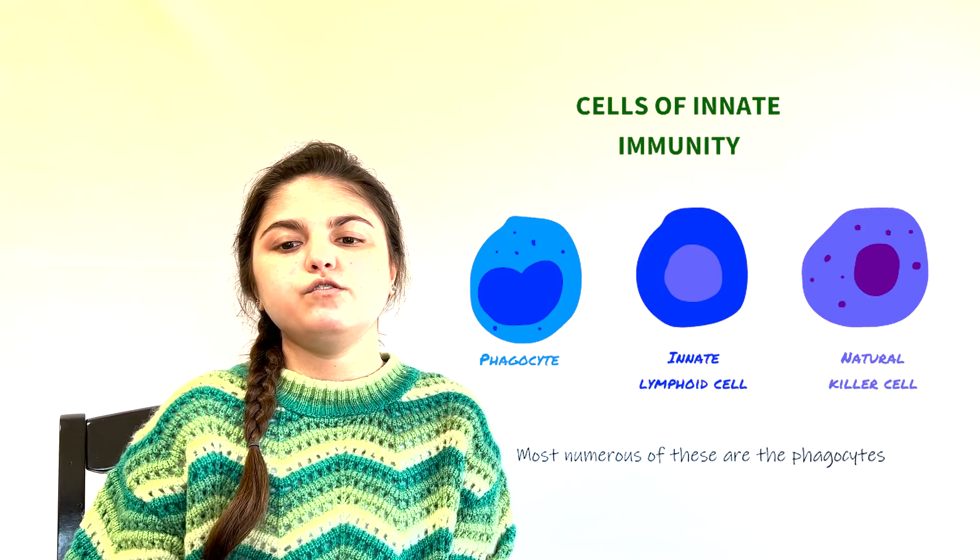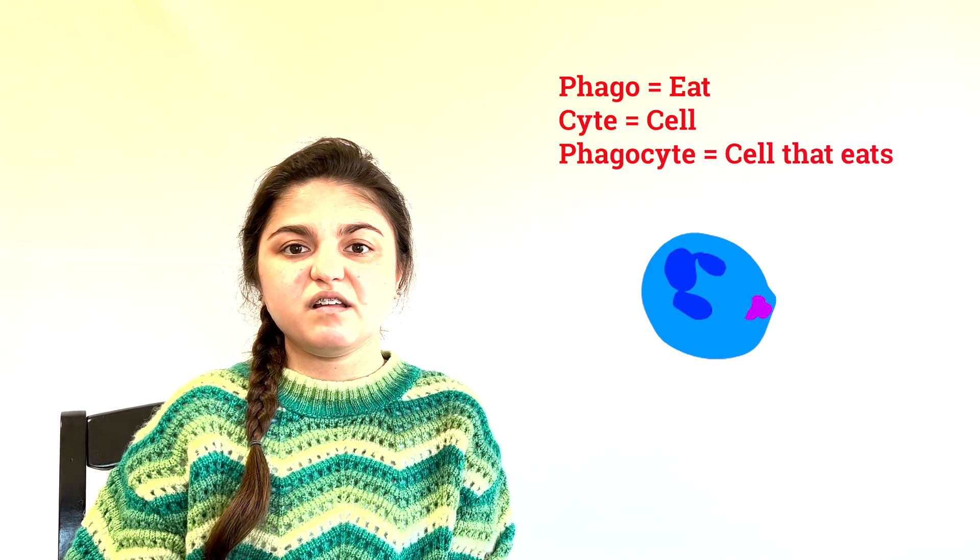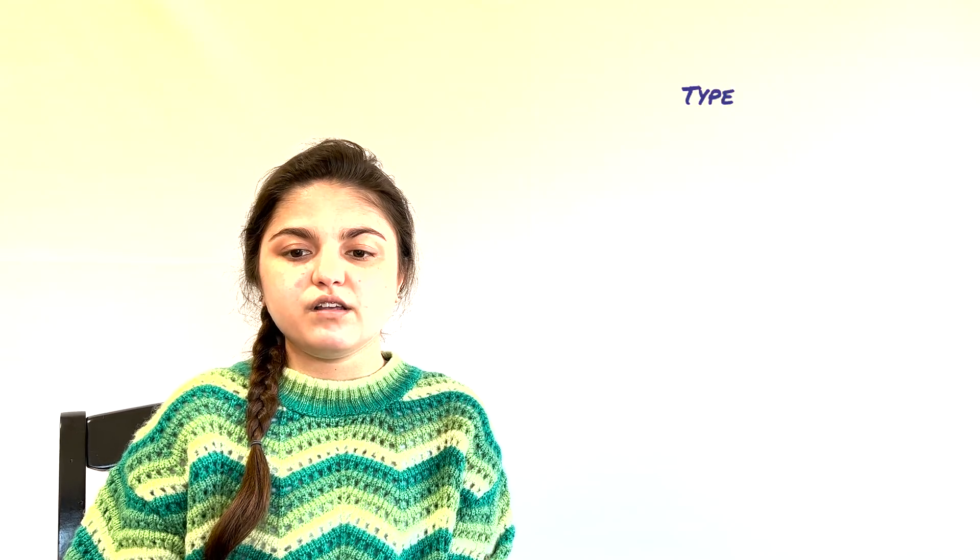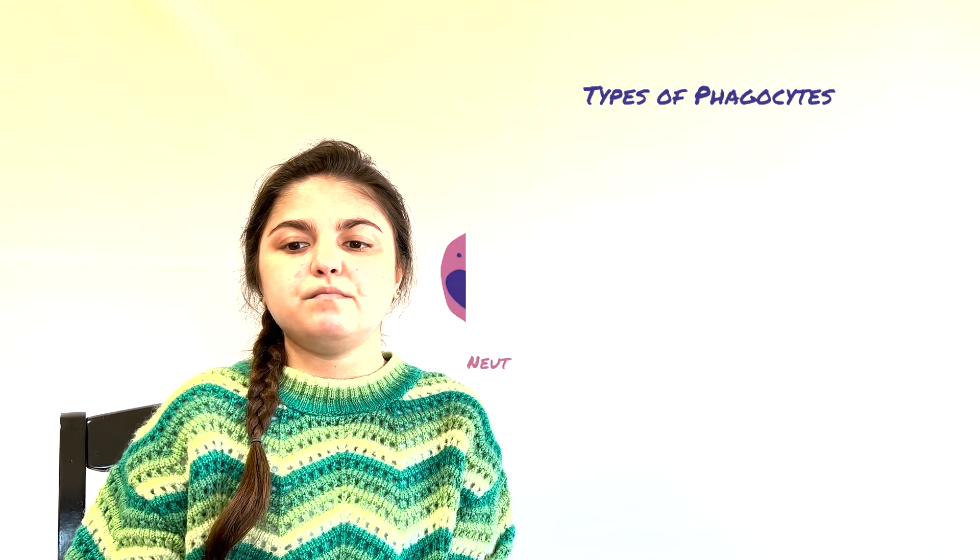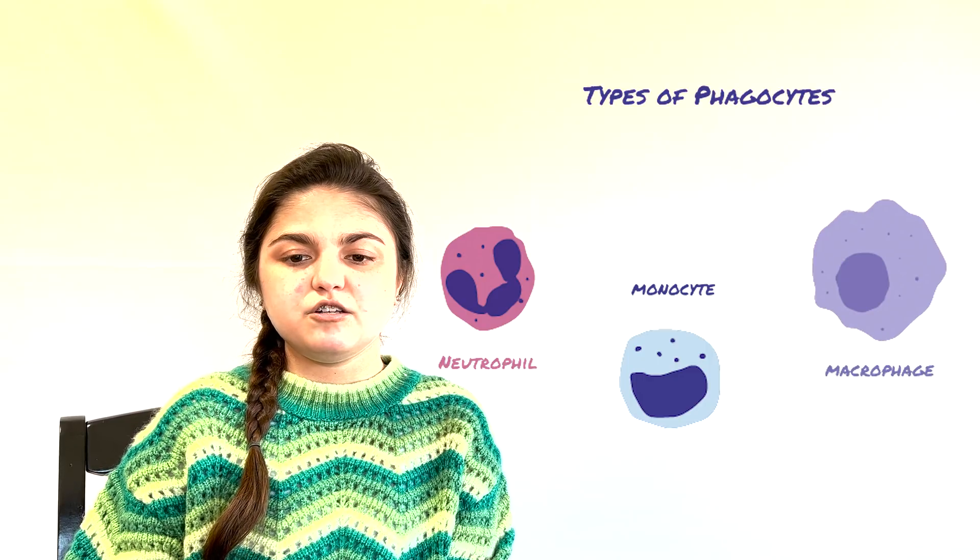Of these, the most numerous are the phagocytes, a word that literally means the cells that eat. These consist of neutrophils and monocytes in the blood and the macrophages in the tissues.